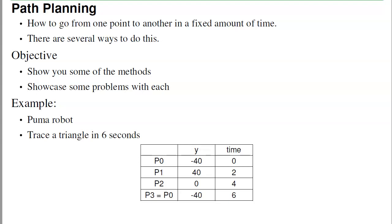The objective here is to show you some of the methods and illustrate some of the problems with each one. And here we're going to use the PUMA robot, tracing out a triangle in 6 seconds.